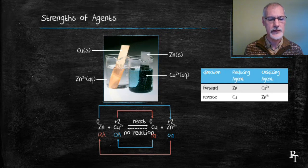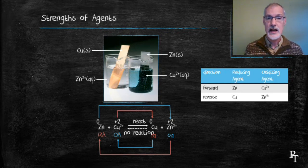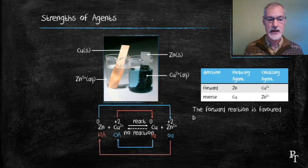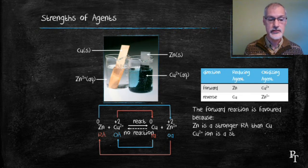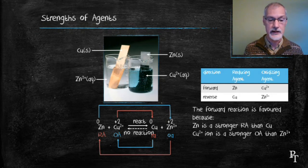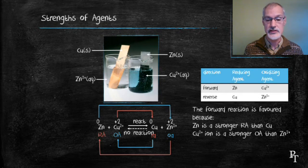So why does the reaction happen in the forward direction? It has to do with the strength of our agents. In the forward direction, the zinc metal is a stronger reducing agent than the copper metal. Similarly, the copper ion is a stronger oxidizing agent than the zinc ion.